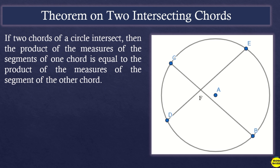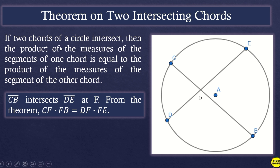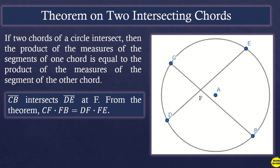As you can see in the illustration, if line segment CB intersects line segment DE at point F inside the circle, then from the theorem: CF times FB is equal to DF times FE. So when line segment CB intersects line segment DE in the interior of the circle, CF times FB equals DF times FE.